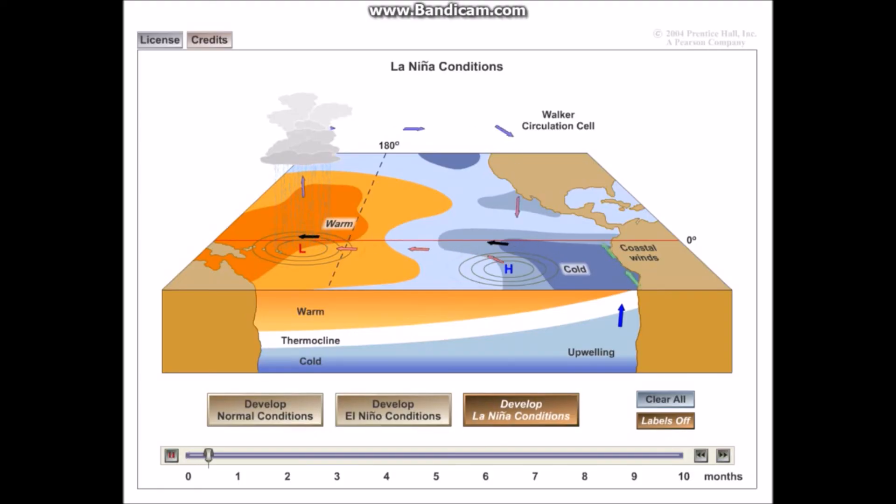Now if I start this video you can see this. So these are the normal conditions and these trade winds actually become stronger and stronger and stronger. And as they become stronger these tend to move the area of low pressure further towards the land and also these surface currents become stronger because the wind is also becoming stronger.